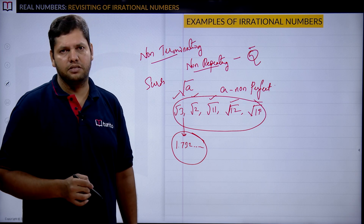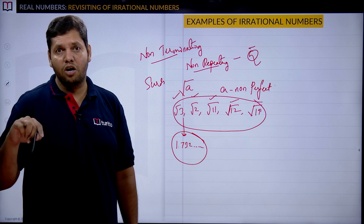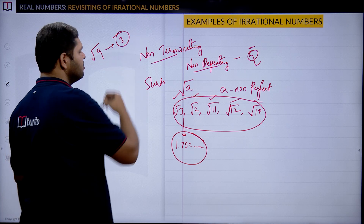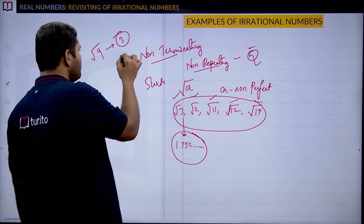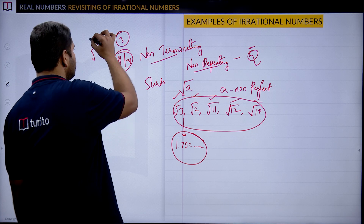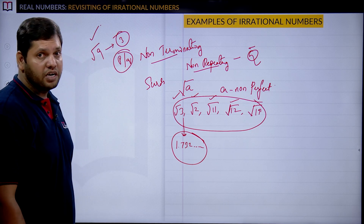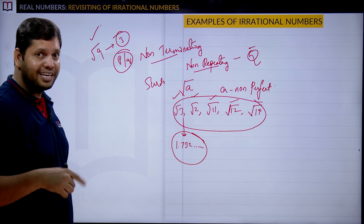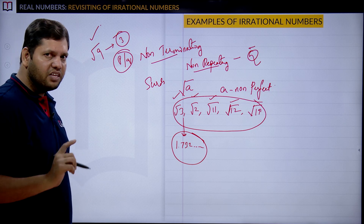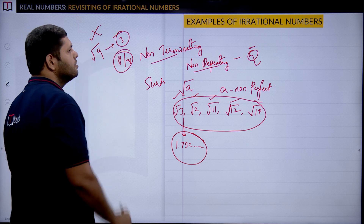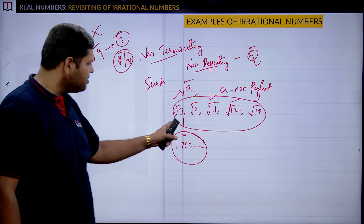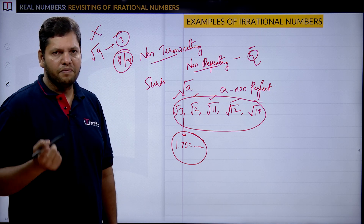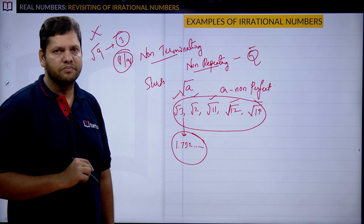Second point: roots with a non-perfect square number. Suppose root a, where a is a non-perfect square number — like root 3, root 2, root 11, root 12, root 19 — we can say those are irrational numbers. But root with a perfect square number — for example root 9, root 9 value is 3, and 3 is in the form of p by q — so we cannot say that is irrational. Roots with non-perfect square numbers are irrational.